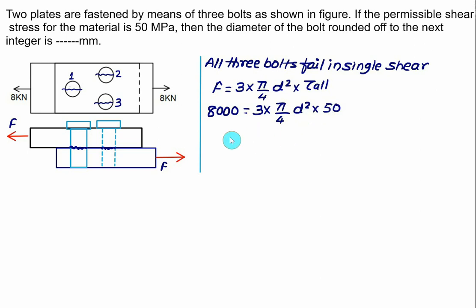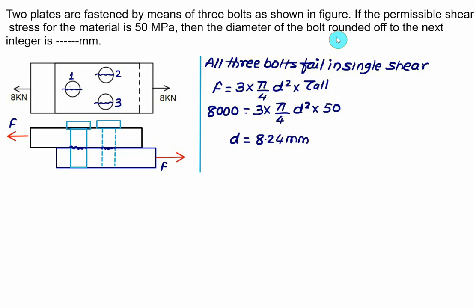Substituting and taking the square root, the exact value of the diameter equals 8.24 mm. Rounding to the next integer gives 9 mm.